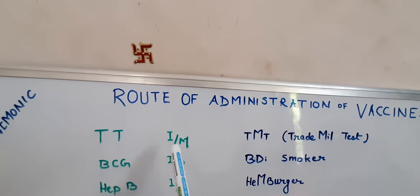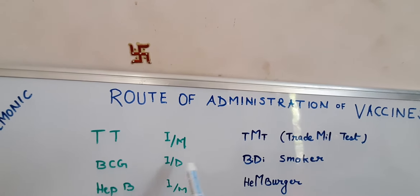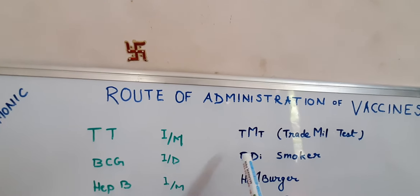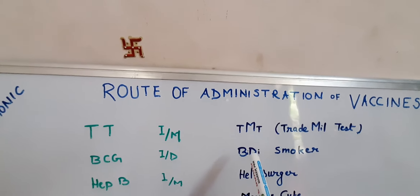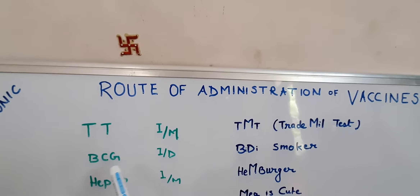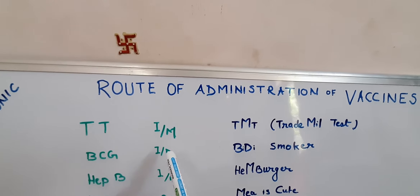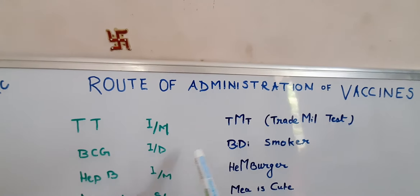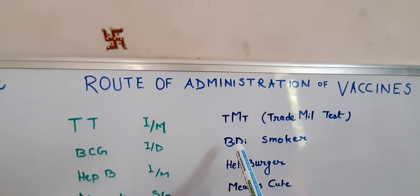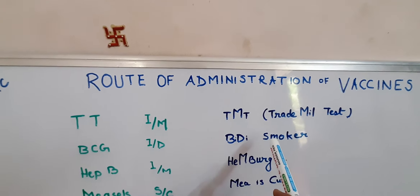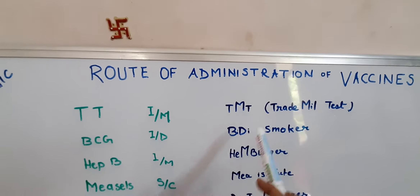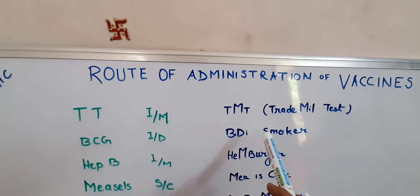For BCG, we will take B from the vaccine name and D from intradermal, making 'BD.' So BCG is remembered as a BD smoker — a person who is a BD smoker. This gives us B for BCG and D for intradermal.